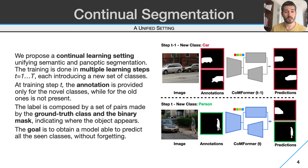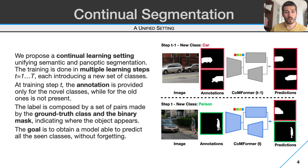Note that for semantic segmentation, the mask includes all the object instances for that class, while for panoptic segmentation, we have a different mask for each object instance. The goal is to train a model able to predict all the classes seen so far, without forgetting previous knowledge and correctly learning the new classes.